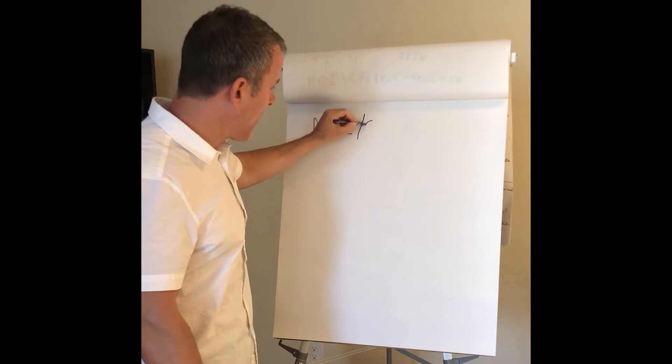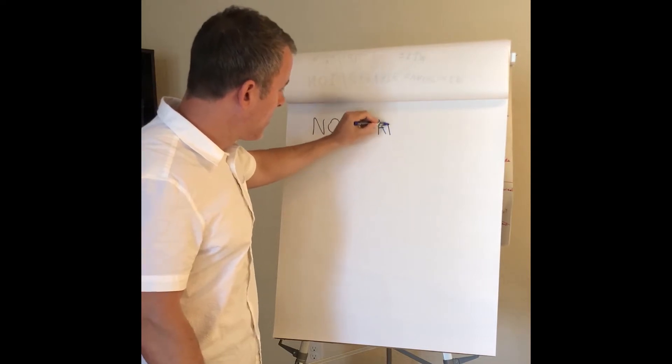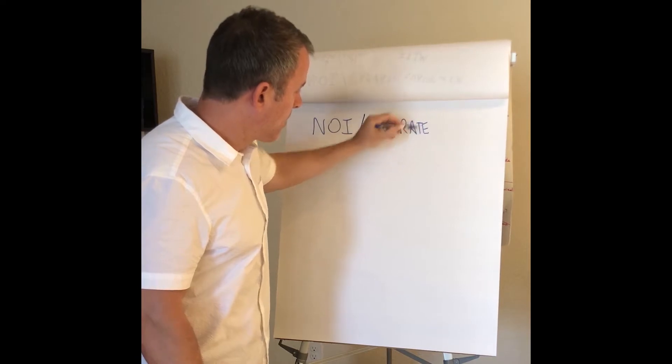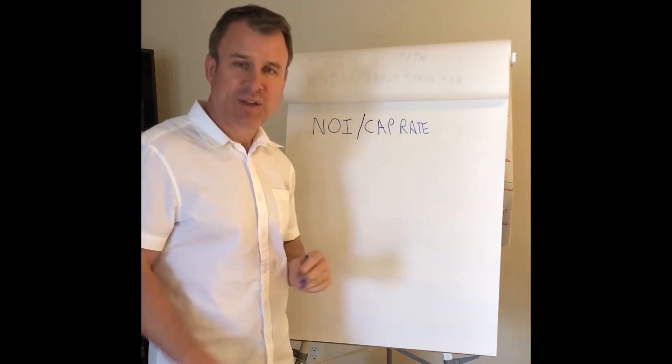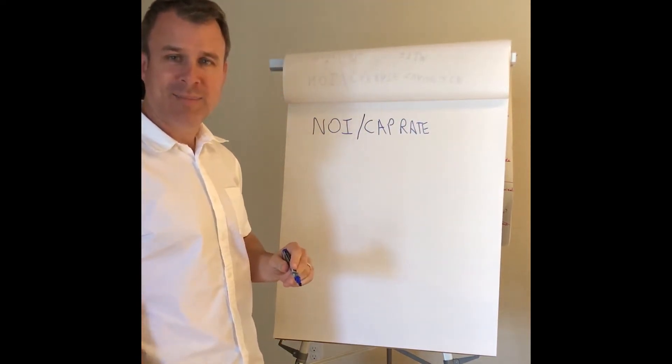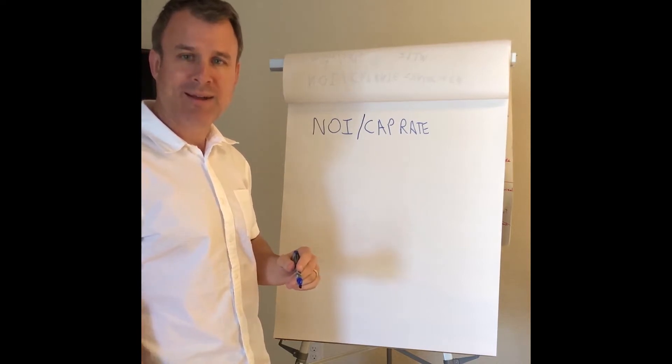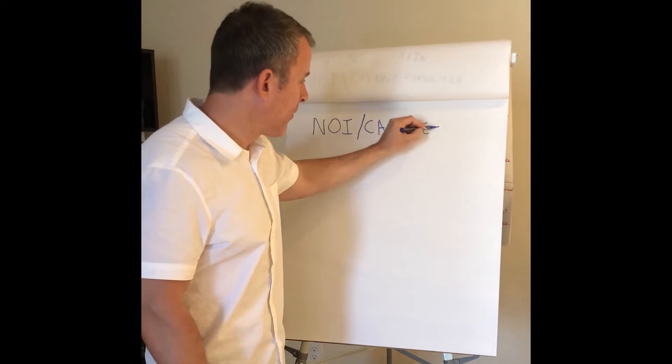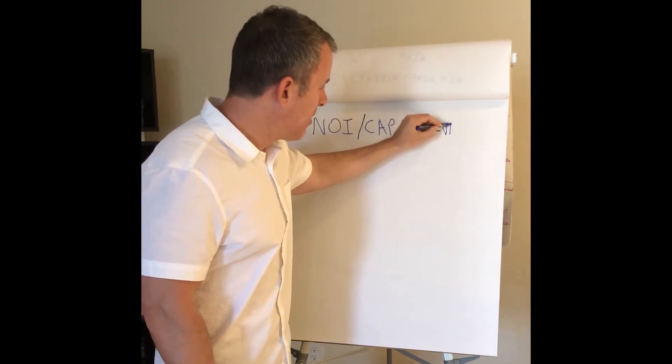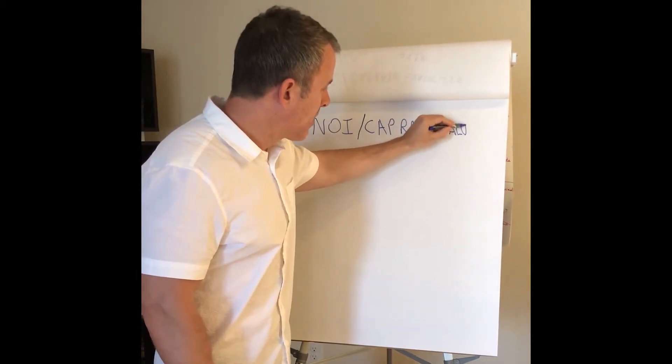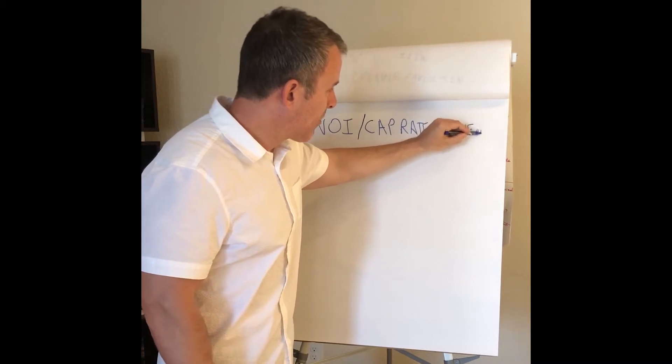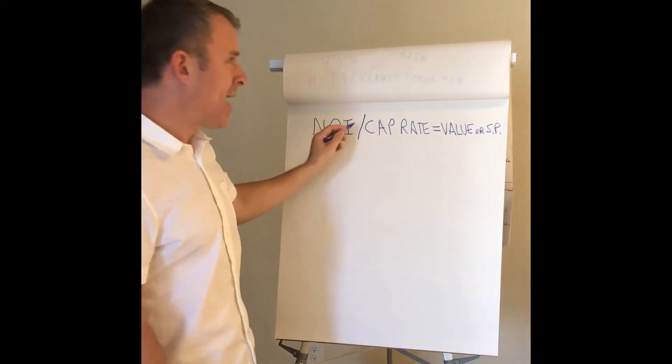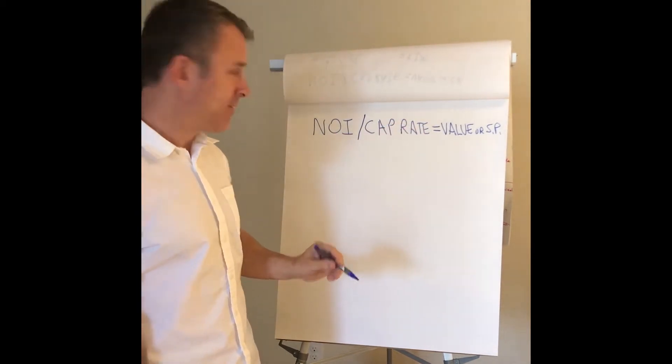Divided by your cap rate. Cap rate is essentially the rate of return somebody would expect to pay for something like an apartment complex if they pay cash. So NOI divided by cap rate equals, let's say your value or basically your selling price if you're buying a property.